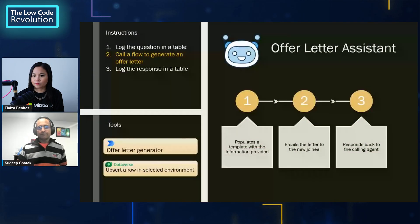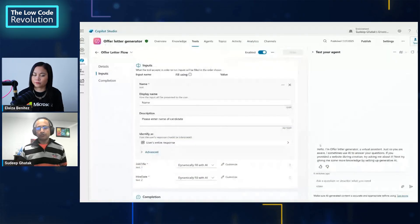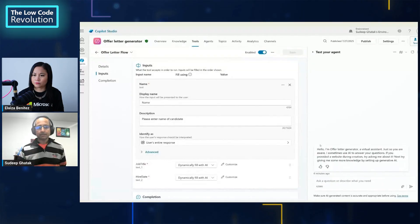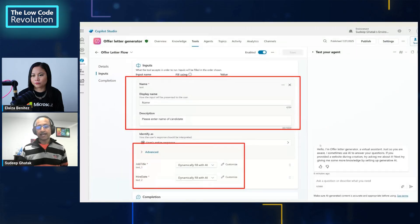Here's my offer letter agent. It has three instructions — the one highlighted in yellow is its primary job, and the other two are simply for logging the conversation between agents. When it's time to generate an offer letter, this agent calls a Power Automate flow. It's equipped with two tools: one to trigger the flow and the other to insert a row into Dataverse. The offer letter agent uses a flow to generate a document — from the tools tab, you can simply search for the flow and add it to the agent. The flow needs to be in the same Power Platform environment. I haven't mapped the flow input fields — I'm letting AI work it out based on the instructions provided in the description field.